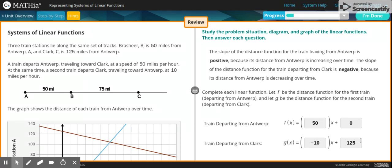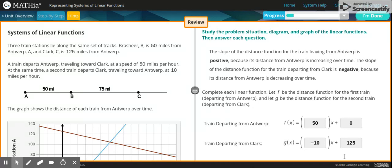And then for this one, train departing from Clark, you're going negative 10 miles an hour basically. But you're still going at a positive speed. It's just that your slope is going to be negative instead of positive because you're leaving your destination. And then the other number is 125 because that's the distance from Clark to Antwerp. And that's how you get that answer.